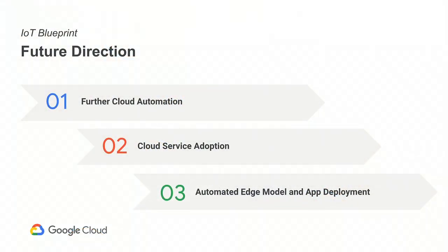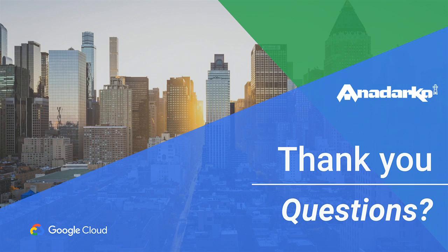In conclusion and future directions: we'd like to further our cloud automation with Git-based tooling such as Terraform and Spinnaker. More cloud service adoption — many have been announced this week, from AI Hub to Cloud Run to Traffic Director for a more managed Istio approach. Eventually, this is all getting us towards the edge — we're looking at several IoT edge platforms to automate retrained models, custom apps, and configurations. And we're hiring — any questions? Thank you.